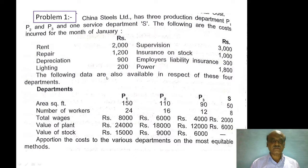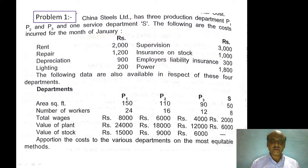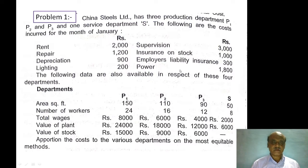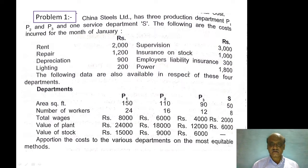The basis of apportionment for each cost is as follows: Repairs — value of plant. Depreciation — value of plant. Lighting — number of light points. Supervision salary rupees 3000 — number of workers. Insurance on stock — value of closing stock. Employer's liability insurance — number of workers. Power — to be allocated on the basis of horse power.